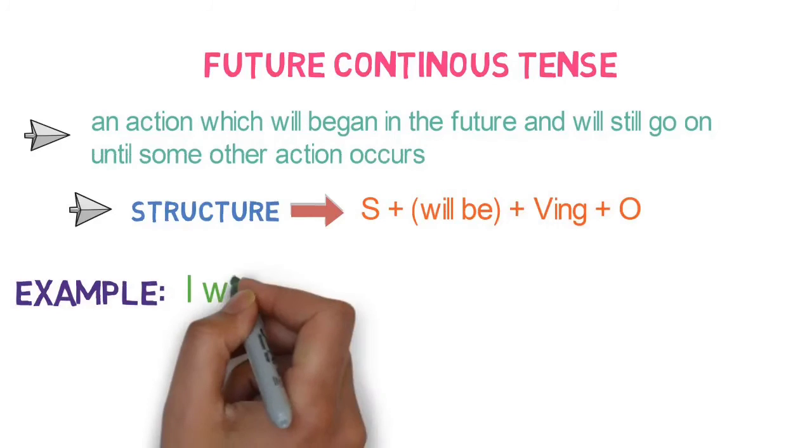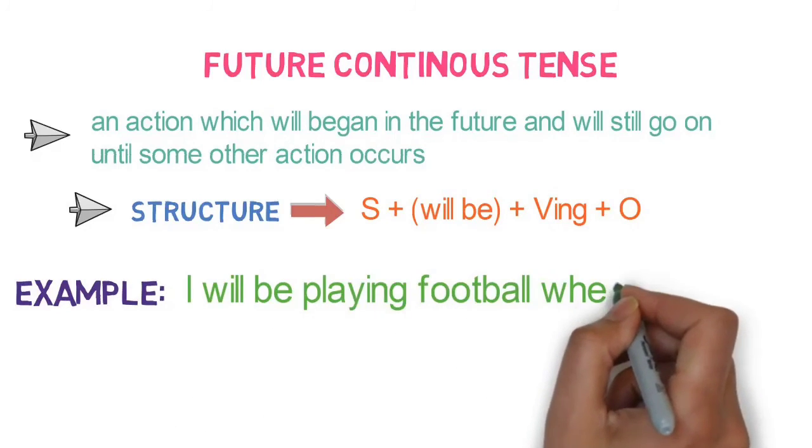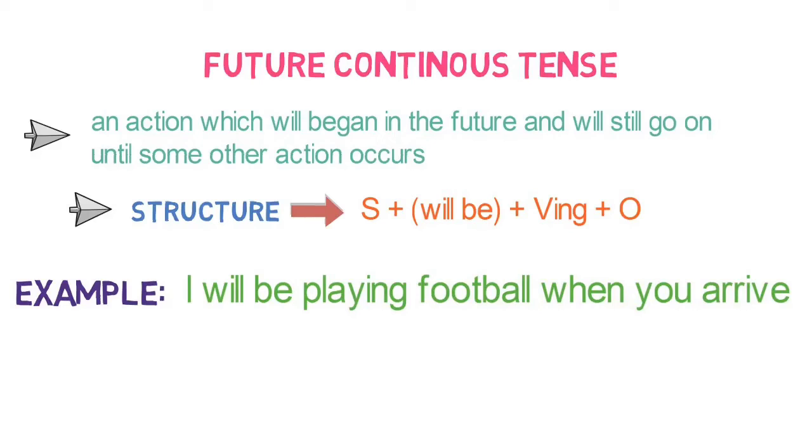For example, I will be playing football when you arrive. Here, I am predicting future action of playing will go on until another action happens.